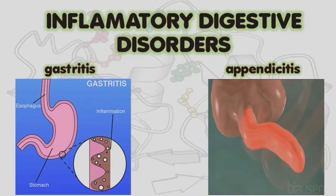Another category is inflammatory digestive disorders, characterized by swelling, inflammation, and pain. We have two types: gastritis and appendicitis. Gastritis is caused by irritation and inflammation of the mucous lining; symptoms include nausea, vomiting, sharp stomach pain, and bloating. It is caused by long-term use of drugs, smoking, or excessive consumption of alcohol, coffee, and tea. Antacids are prescribed to reduce acid secretion and antibiotics for infection.